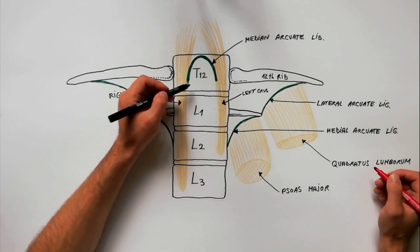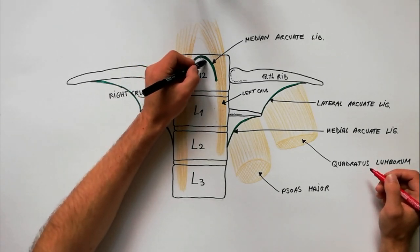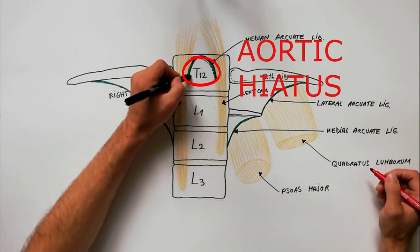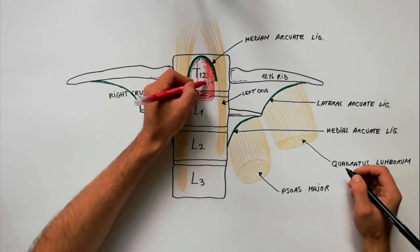The space between the median archoid ligament and the body of T12 vertebra is called the aortic hiatus. The main structure that is passing through the aortic hiatus is the aorta.